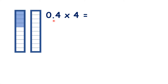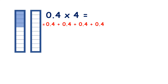What is 0.4 times 4? Well, we know that multiplication is repeated addition, so we can add 0.4 four times. So if we have 0.4 — if we have 4 tenths — then we can multiply that by 2, 3, 4, and now we have 1 and 6 tenths, or 1.6, as our total.